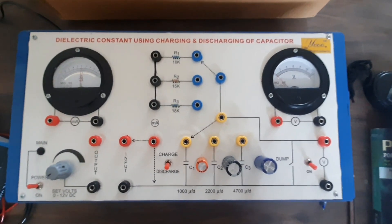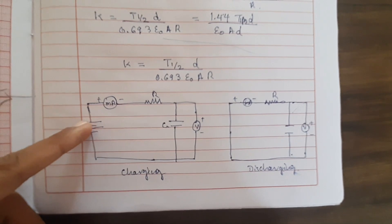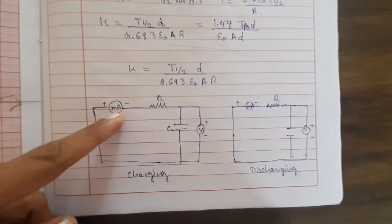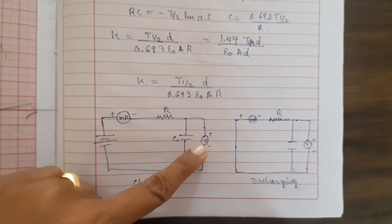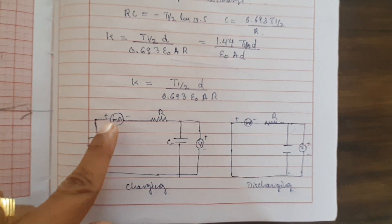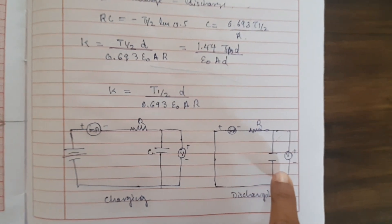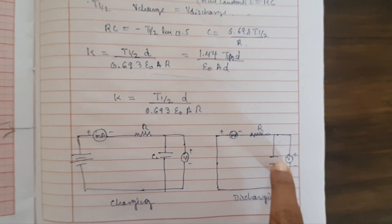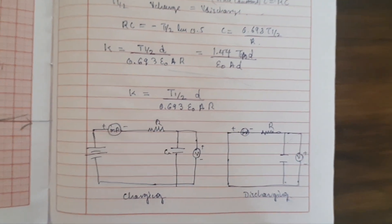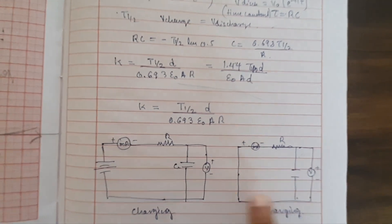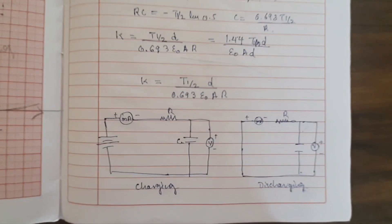Before starting, let us look at the circuit diagrams for charging and discharging mode. In charging mode, when we apply voltage, current starts flowing through the ammeter, then through the resistor and capacitor — voltage is going to increase and current is going to decrease. In discharging mode, we reverse the phenomena: current decreases and voltage across the voltmeter also decreases. So to summarize: in charging mode, voltage increases and current decreases; in discharging mode, both current and voltage decrease.